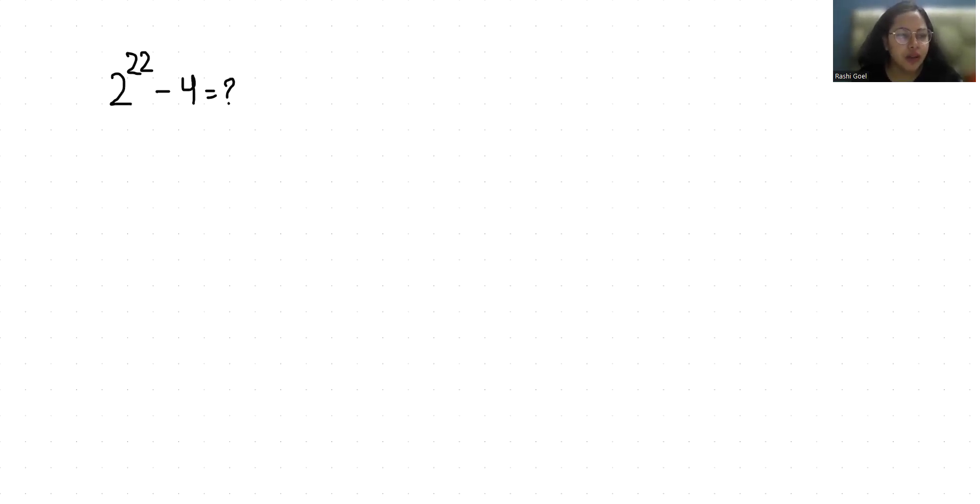2^22 I can write as (2^11)^2. Similarly this 4 as 2^2. Now I am going to use a very famous identity that is a^2 - b^2 which equals (a+b)(a-b).